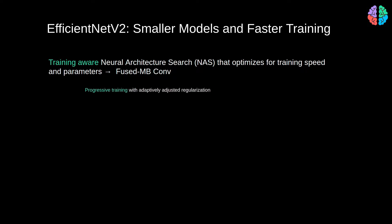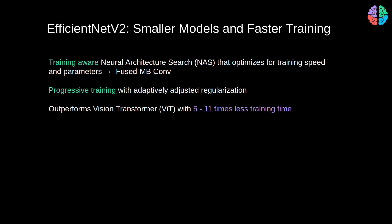They also introduce what is called progressive training, which works pretty well with adjusted regularization. And lastly, they benchmarked the proposed EfficientNet version 2 with other methods and show really good performance improvements.